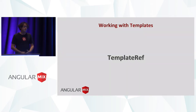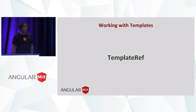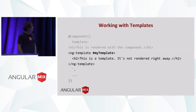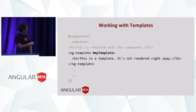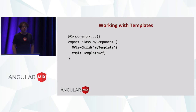So how do we do that? In order to send the template around from one component to another, we need a way to talk about it in code. In Angular, that's called a template ref — a reference, a handle to the template that we can send around in services. We get one through a two-step process. First, we give the template a name using the hashtag symbol, so this template is named myTemplate. Then we use the ViewChild annotation to query for it, and Angular will find that template and give us a reference to it in code.